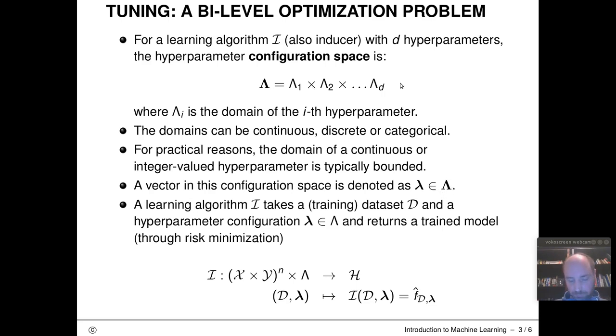And the learning algorithm I now takes a training data set D and a hyperparameter configuration lambda, training set D of size N and a hyperparameter configuration lambda and returns back an object from our hypothesis space, usually through risk minimization. So D and lambda go in and the inducer returns a fitted model on the data set with configuration vector lambda.